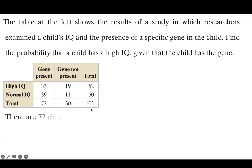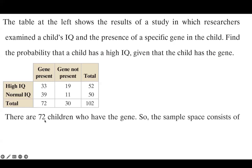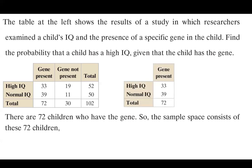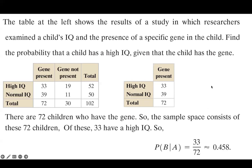Now let us find the conditional probability. We know that there are 72 children who have the gene, so the sample space consists of these 72 children — we just focus on them. Our goal is to find the probability that a child has a high IQ given the child has the gene. Children who have the gene and also have a high IQ number 33.